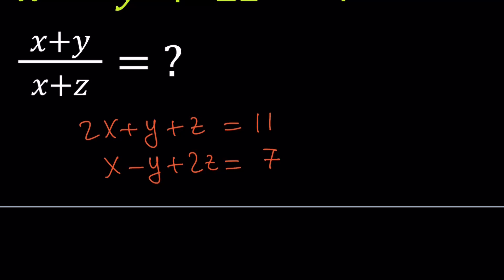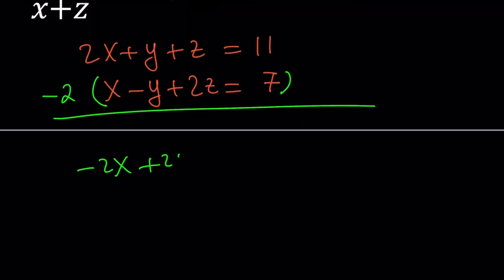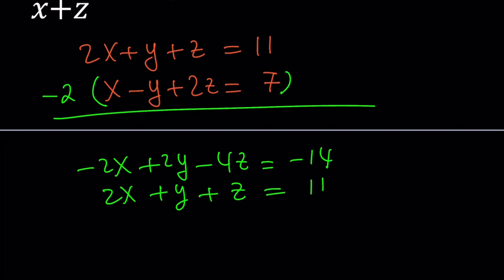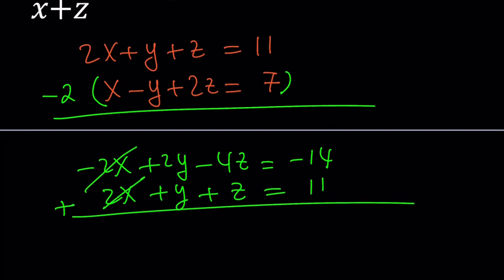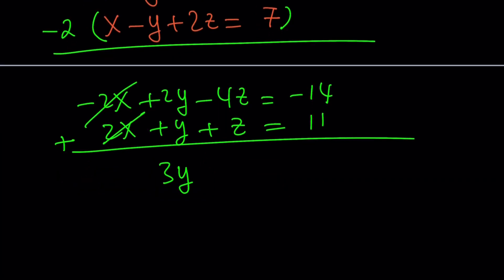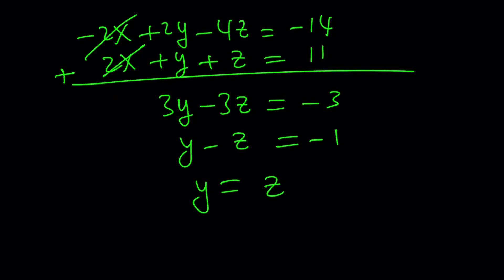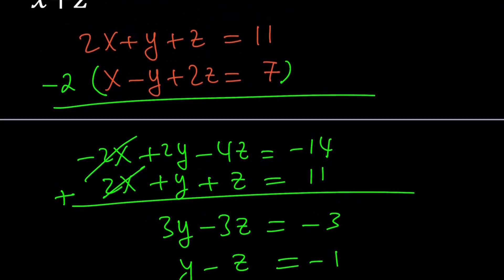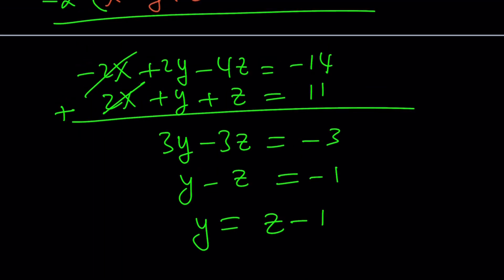Let's multiply the second equation by negative 2. That gives us negative 2x plus 2y minus 4z equals negative 14. The first equation is 2x plus y plus z equals 11. Let's add these up — the x terms cancel, and we get 3y minus 3z equals negative 3. Dividing both sides by 3 gives y minus z equals negative 1, or y equals z minus 1. So whatever z is, y is just 1 less than that.